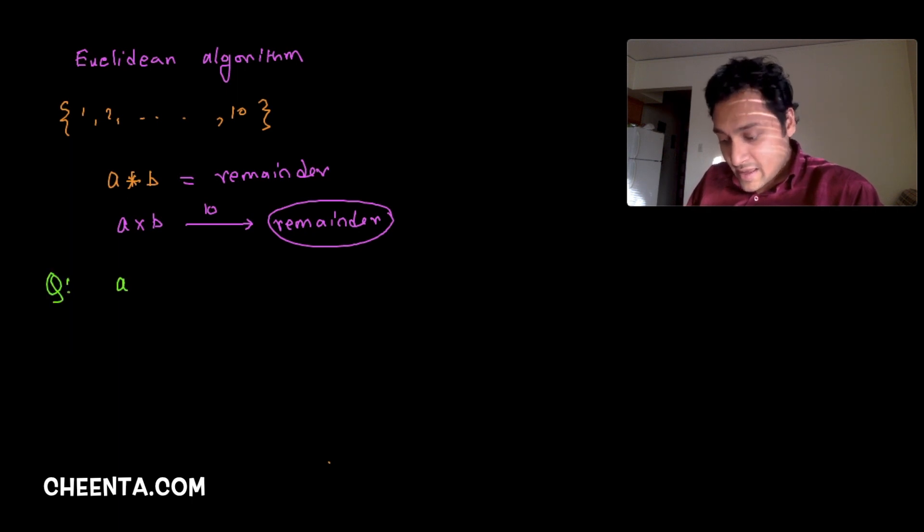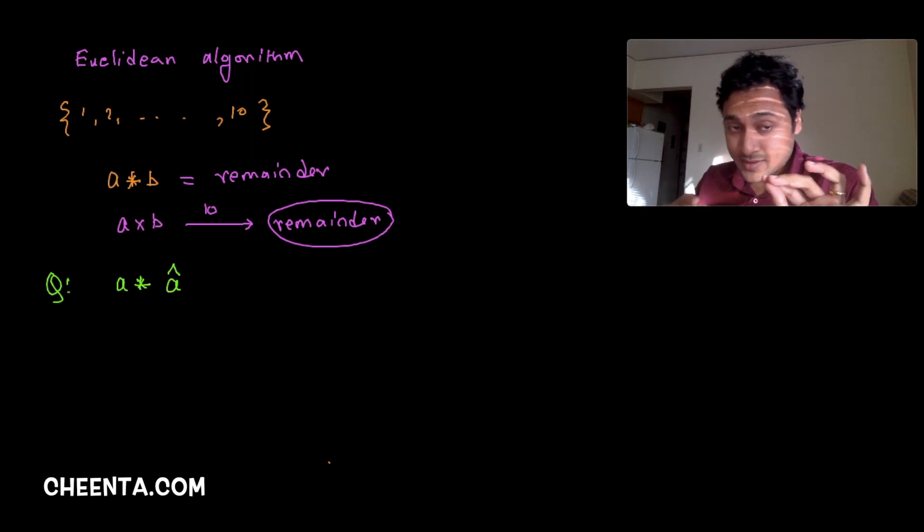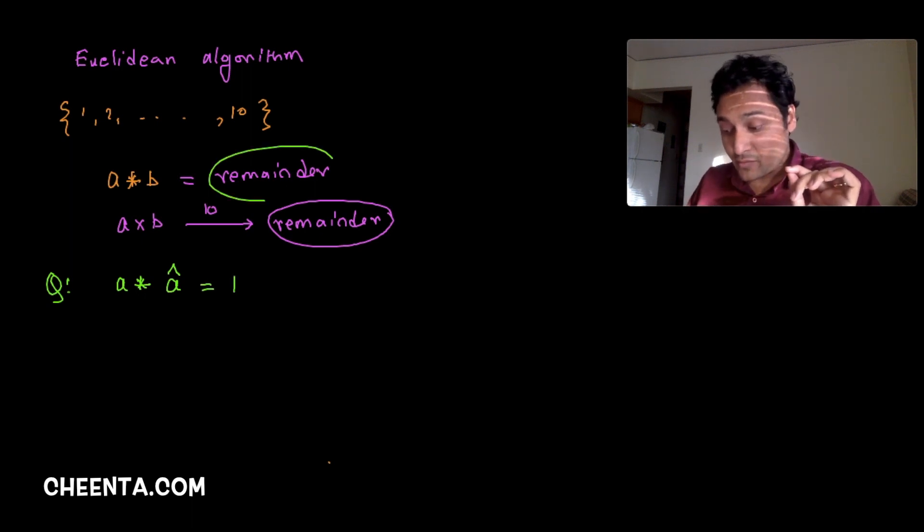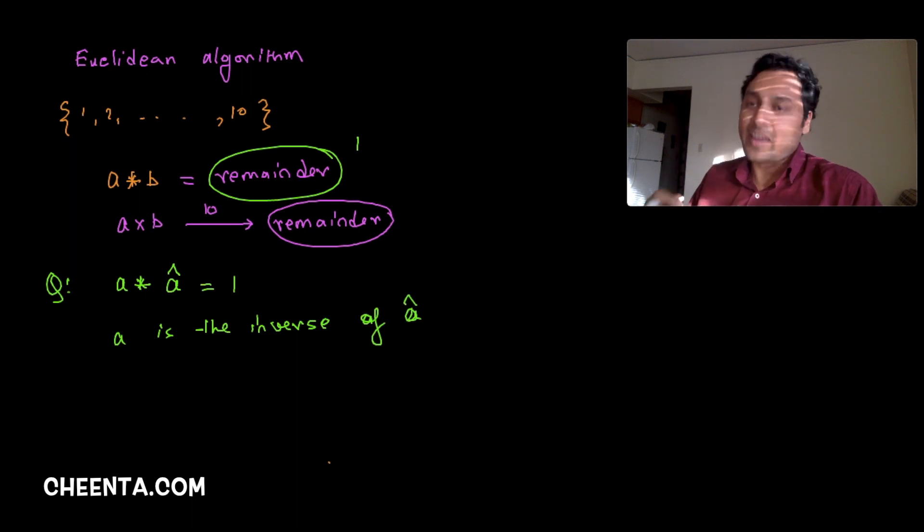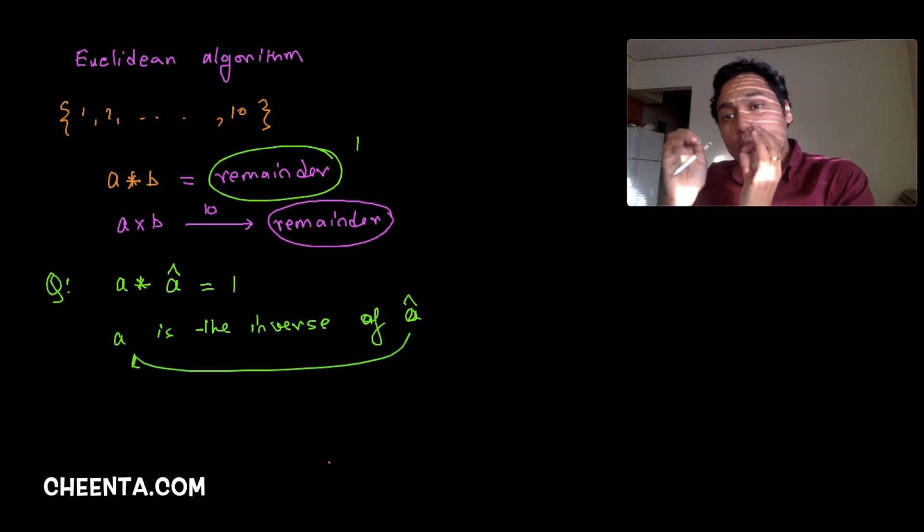The question was, for a particular number a, can we find something called a hat, maybe we can call it a inverse? Can we find another number a hat such that a star a hat, whatever that operation is, is equal to one? If we can find such an a hat, then a is the inverse of a hat and vice versa.